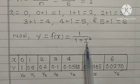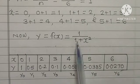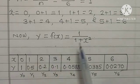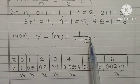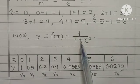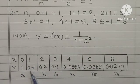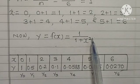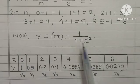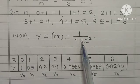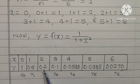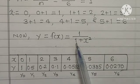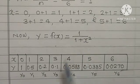So first value is 0. If you put 0, value of X, that is 1 upon 1. So here write Y is equal to 1. Second value of X is 1, put here 1. 1 square is 1, 1 plus 1, that is 2. 1 upon 2, that means 0.5. Similarly, X is 2, put here 2 square, 4 plus 1, that is 5. So 1 upon 5, that is 0.2. Then X is 3, put here 3 square is 9, 9 plus 1, that is 10. 1 upon 10, that means 0.1.